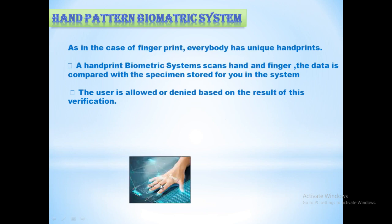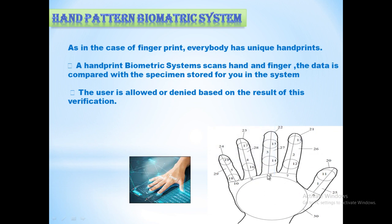When scanning, you place your entire hand on the scanner. Both your palm and your fingers are scanned. If the data matches comparatively, it is automatically stored in the system. When you try to open the system a second time, it will only open if the data matches again. All the points of your palm and fingers are scanned, and only if they match does the hand pattern biometric system work.